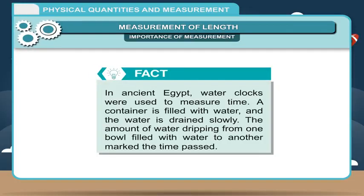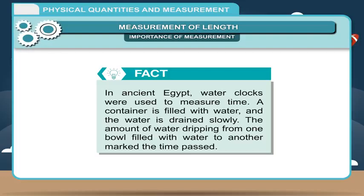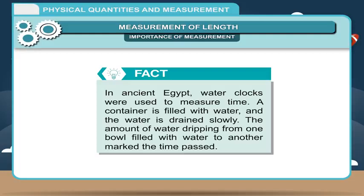Fact: In ancient Egypt, water clocks were used to measure time. A container is filled with water and the water is drained slowly. The amount of water dripping from one bowl filled with water to another marked the time that had passed.